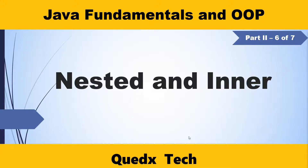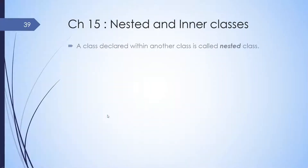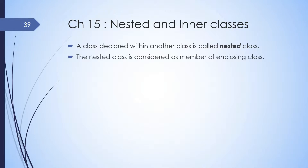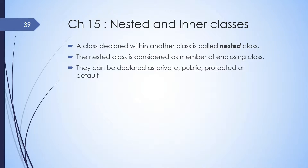In this section, we are going to cover nested and inner classes. A class declared within another class is called a nested class. The nested class is considered as a member of an enclosing class. They can be declared as private, public, protected, or default. A nested class can access the private members of an enclosing class.